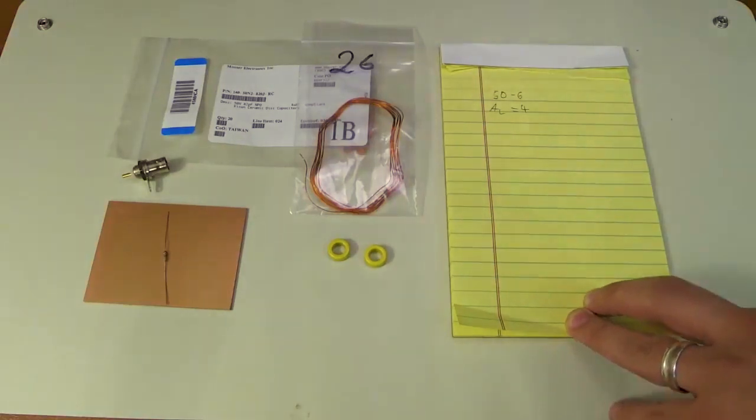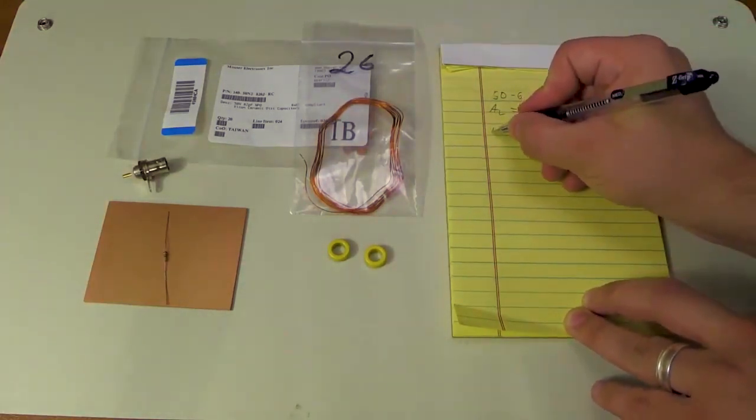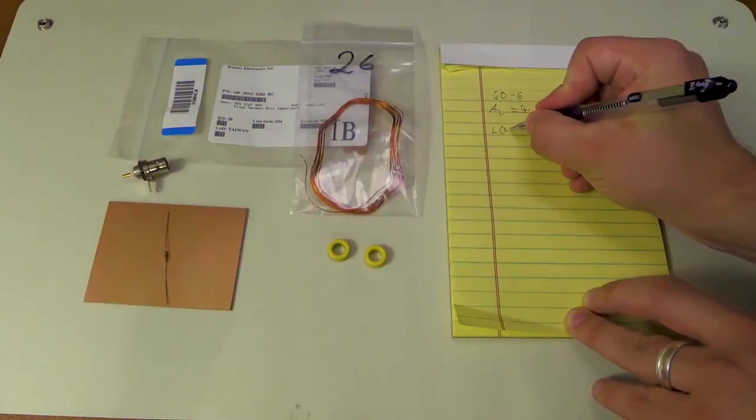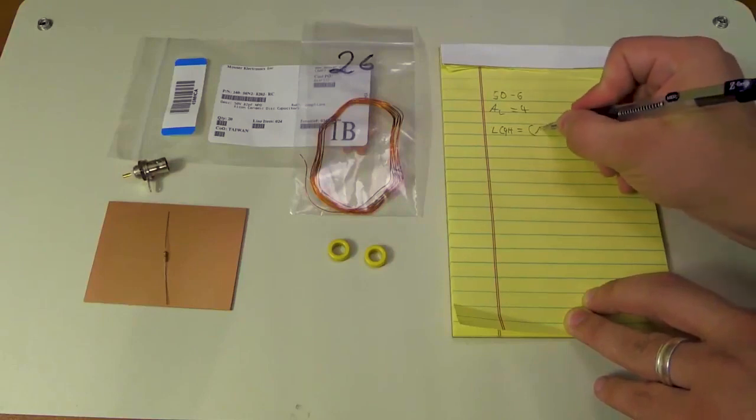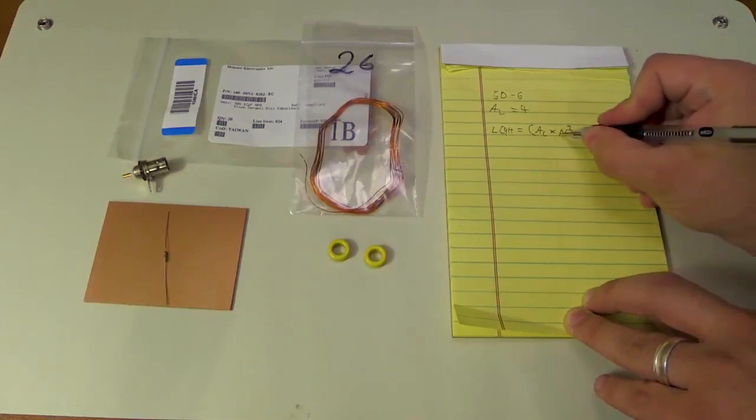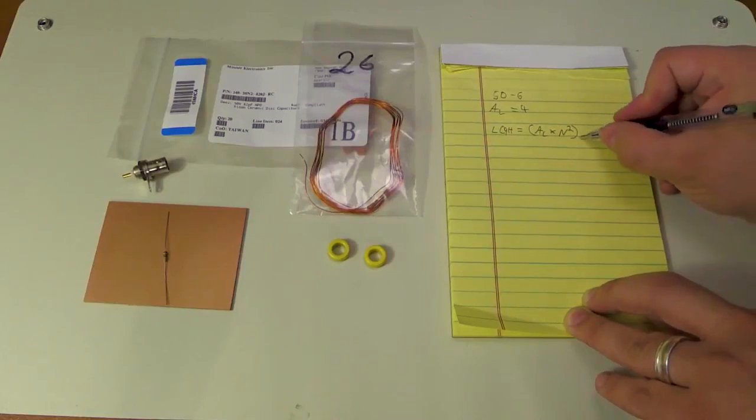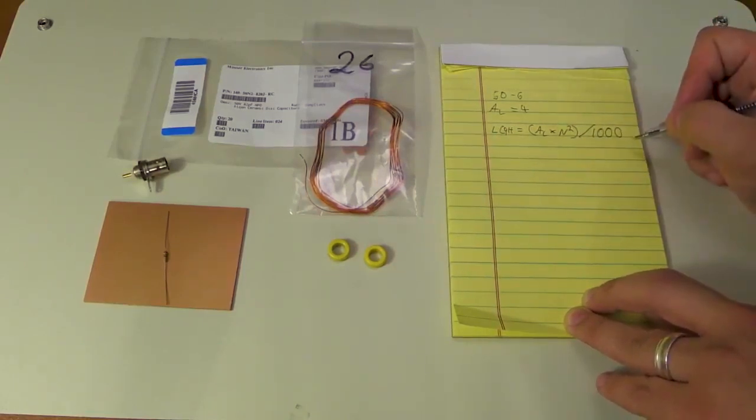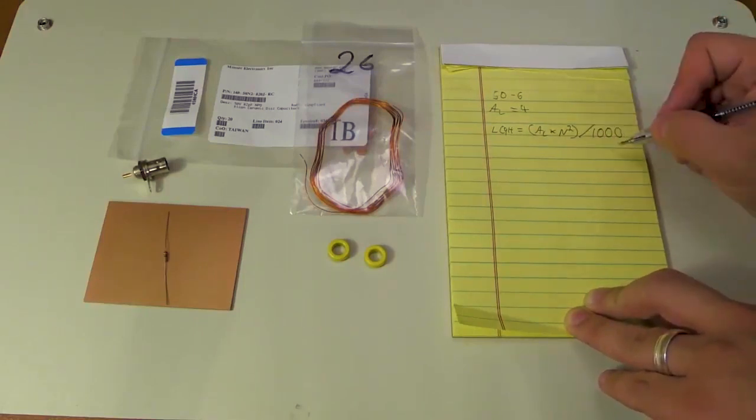So our AL index equals 4. And the way you calculate the inductance out of this in microhenrys, so L in microhenrys equals AL times N squared, that's obviously going to be your count of windings that you put through there, that whole thing divided by 1,000. Once again, you will really appreciate if you're fluent in math, because now we have to rearrange the whole thing for N.